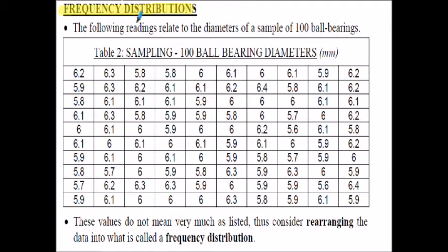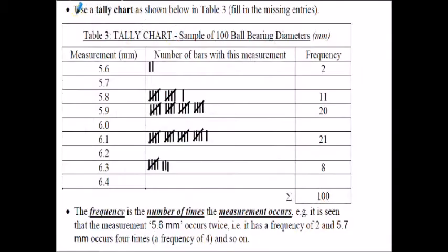Frequency distributions - the following readings relate to diameters of the sample of 100 ball bearings. We have a hundred values in this table and the values do not mean very much as they're listed. So we need to rearrange them into what we call a frequency distribution, and to do that we're going to use a tally chart.